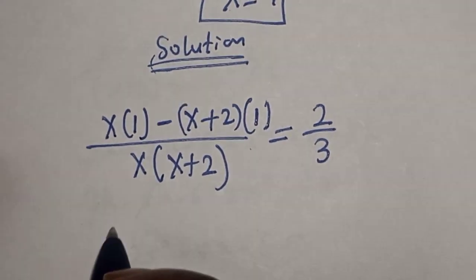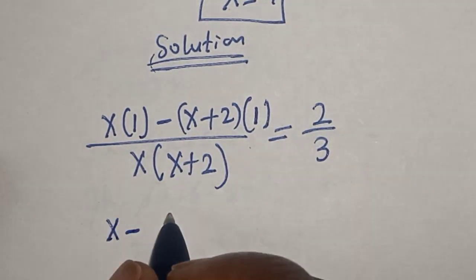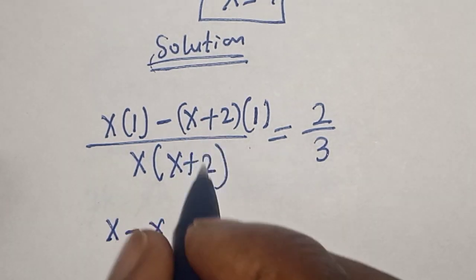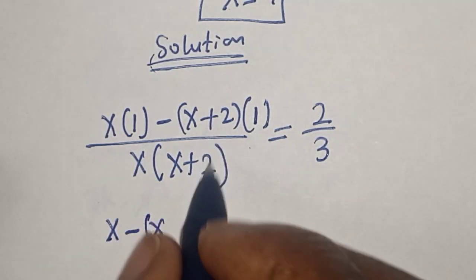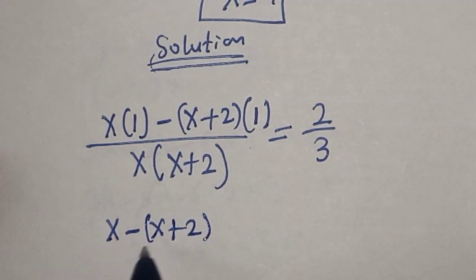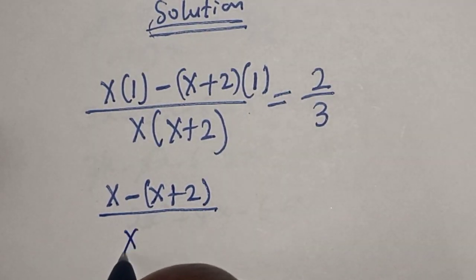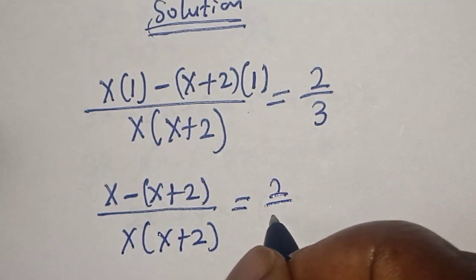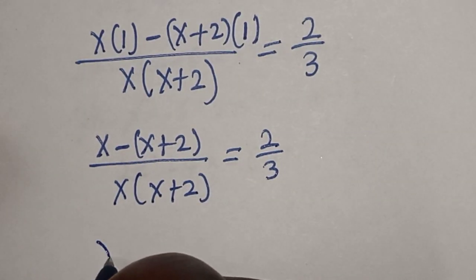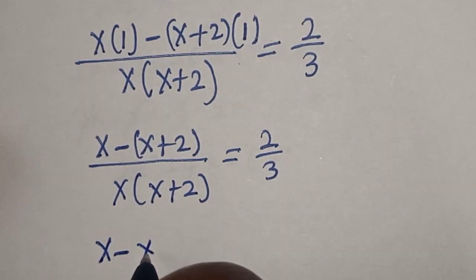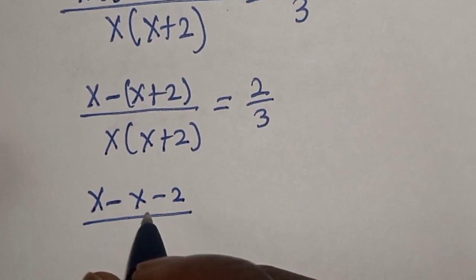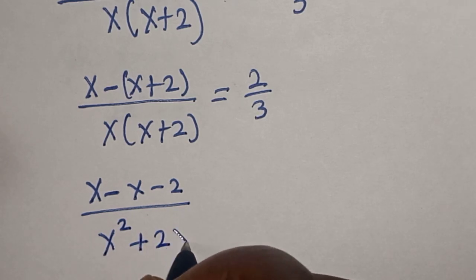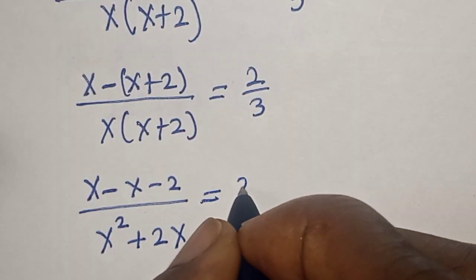And let's open the bracket. x times 1, that is x, minus x plus 2, divided by x times x plus 2, is equal to 2 over 3. Then this is x minus x minus 2, divided by x squared plus 2x, is equal to 2 over 3.